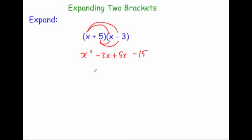Then we just need to simplify the two middle terms. So it would be x² - 3x + 5x. Well -3 plus 5 is 2, so it would be plus 2x - 15. And that's it. So that's how you would expand (x + 5)(x - 3).